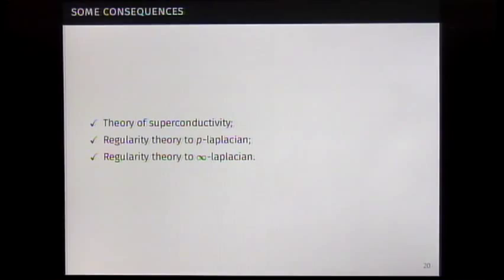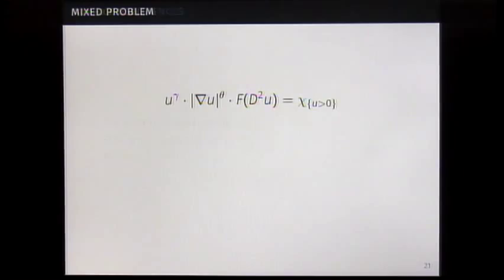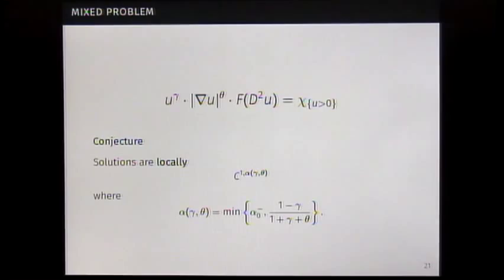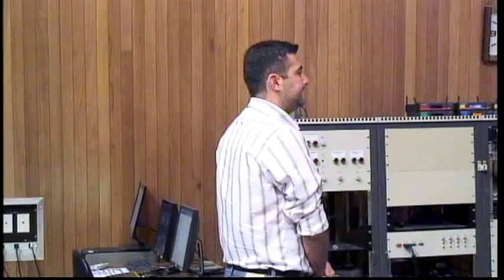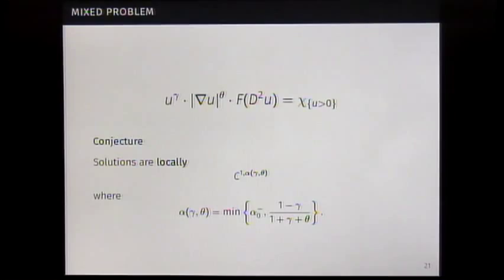I would like to talk about the mixed problem, when you consider at the same time the singular and degenerate term. This problem is open. But we have a conjecture. Solutions should be C1 alpha^2, where alpha is given by that situation. Teixeira has proven that regularity for critical in the singular set. Also, he has proven some continuity results, like a compactness result. But it can't be developed for this case.